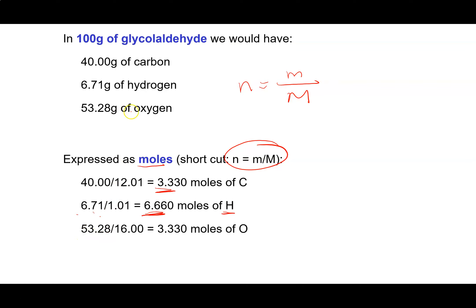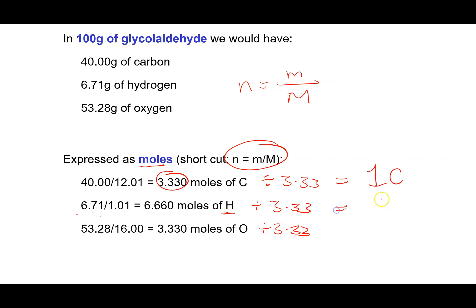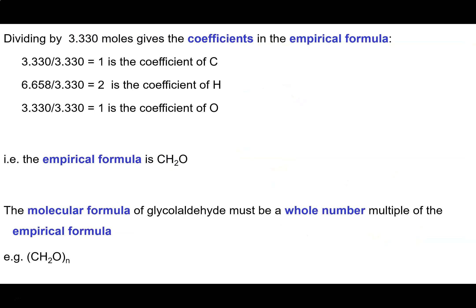Then 53.28 grams of oxygen divided by the molar mass of oxygen (16) gives 3.3 moles of oxygen. To get the simplest whole number ratio, we divide each of these by the smallest value, 3.3. That gives us 1 carbon for every 2 hydrogens for every 1 oxygen. So the empirical formula is CH₂O.